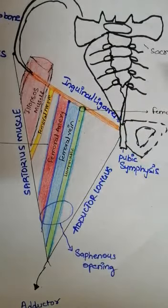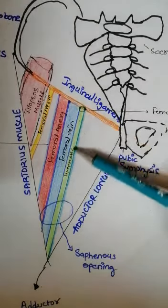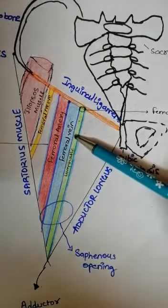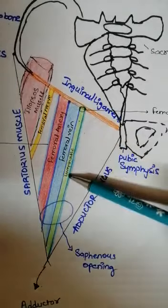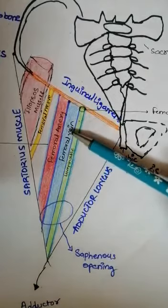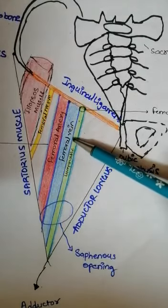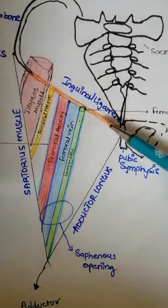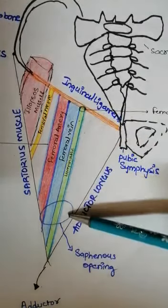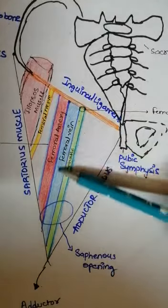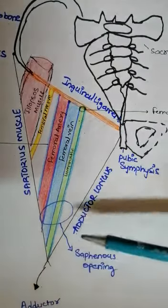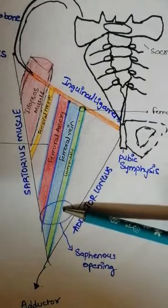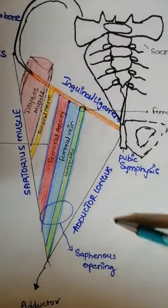This femoral ring, or femoral canal, is an area where there is passage of a lymphatic vessel. This lymphatic vessel is the most medial structure, positioned medially towards the femoral vein, and is also a content of the femoral sheath. So these three contents from lateral to medial — the femoral artery, femoral vein, and lymphatic — form the femoral sheath, also called the femoral fascia. The femoral vein and lymphatic vessel pass through an opening called the saphenous opening into the lower limb.